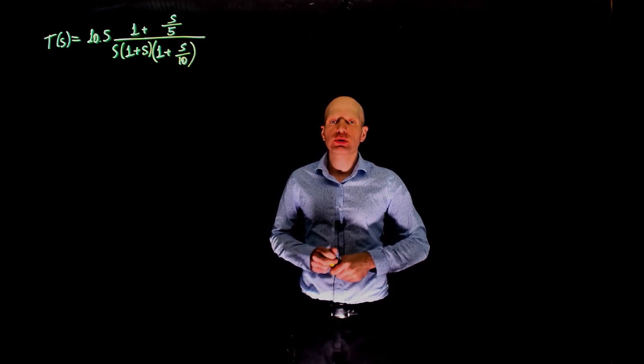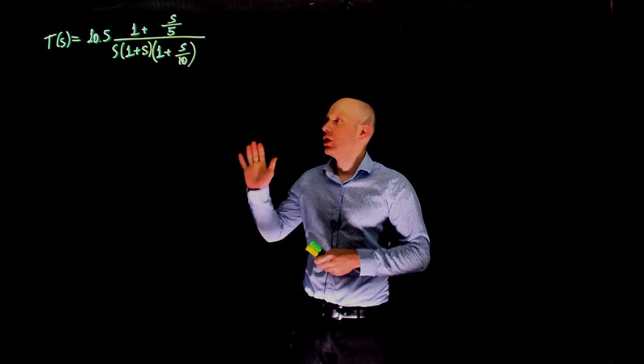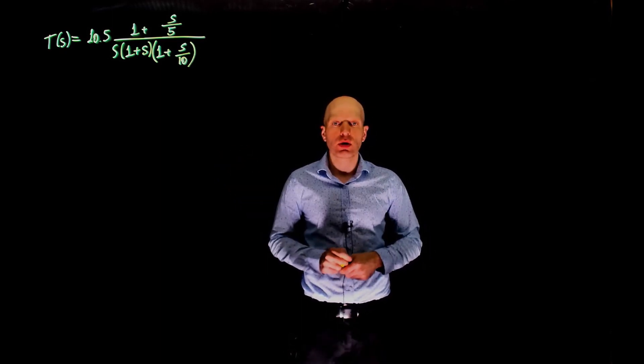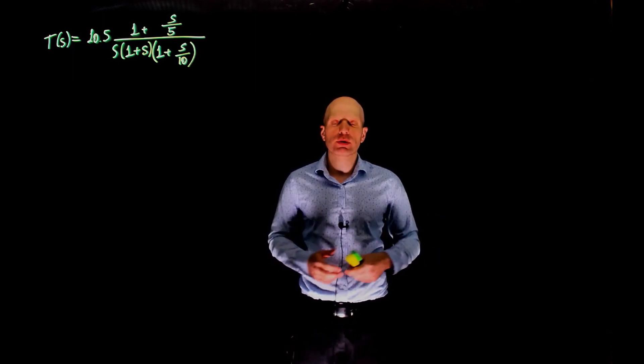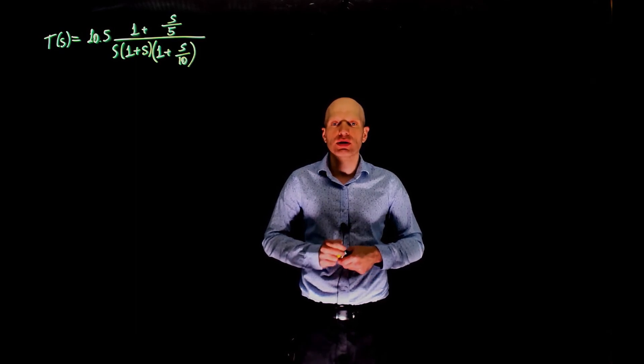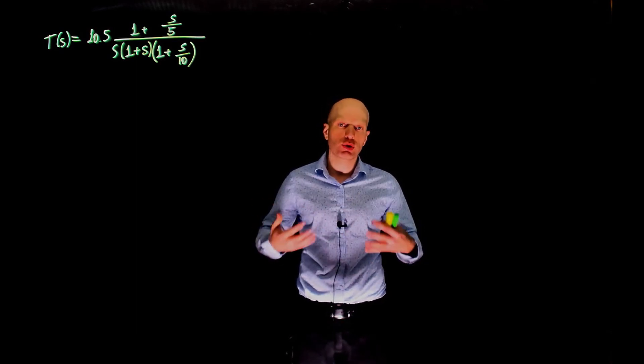Here we have another example where you're interested in finding the phase margin of transfer function T. To do that, we first need to determine the crossover frequency. The crossover frequency is the frequency for which the gain of the transfer function is 0 decibels, or the magnitude is 1.